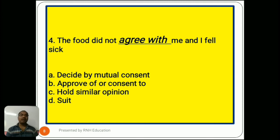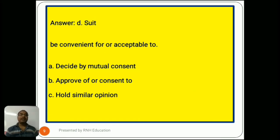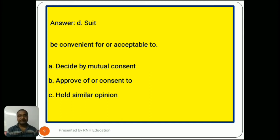Question number 4: 'The food did not agree with me and I felt sick.' Options are A) decide by mutual consent, B) approve or consent to, C) hold similar opinion, D) suit. The answer is D) suit, meaning being convenient for or acceptable to. Option A, decide by mutual consent, is not possible here. Option B, approve of or consent to, and Option C, hold similar opinion, are also not the right meanings in this context.